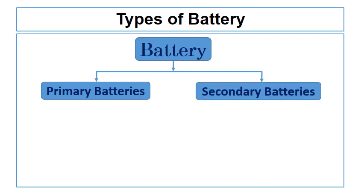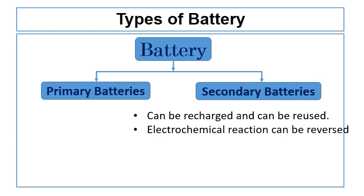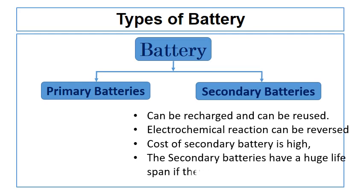Secondary batteries are batteries which can be recharged and reused. The electrochemical reaction can be reversed in secondary batteries by applying a certain voltage to the battery in reverse direction. However, the cost of secondary batteries is high, but they can be recharged and reused. The secondary batteries have a huge lifespan if they are charged properly.